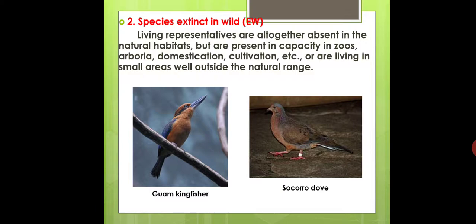Such species are protected by human beings. Many plants are protected because they are living in zoos or arboreta — a collection of trees — or through domestication and cultivation. Such organisms are called Species Extinct in Wild, EW.